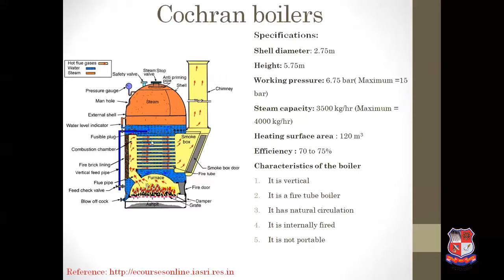Now, next is the Cochrane boiler. This is the figure of the Cochrane boiler. Its characteristics: it is a vertical boiler, it is a fire tube boiler, it has natural circulation of water, it is internally fired, and it is not portable. Now we are going to study the construction of this kind of boiler.